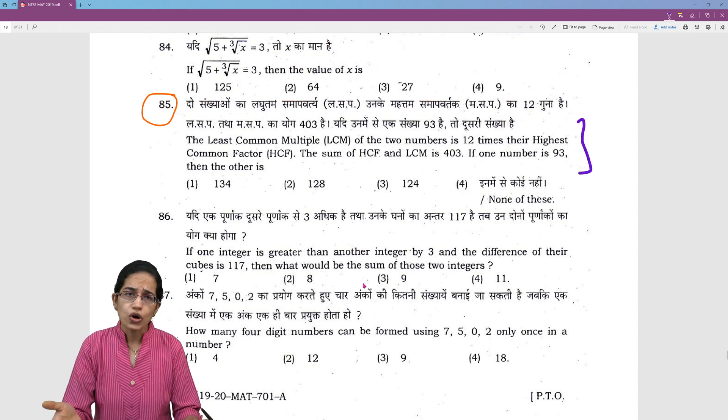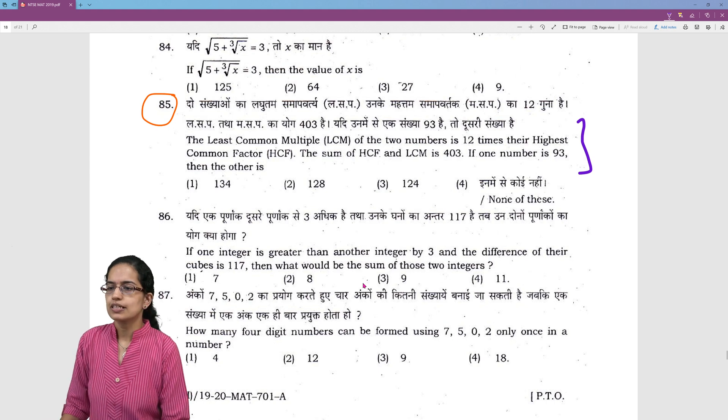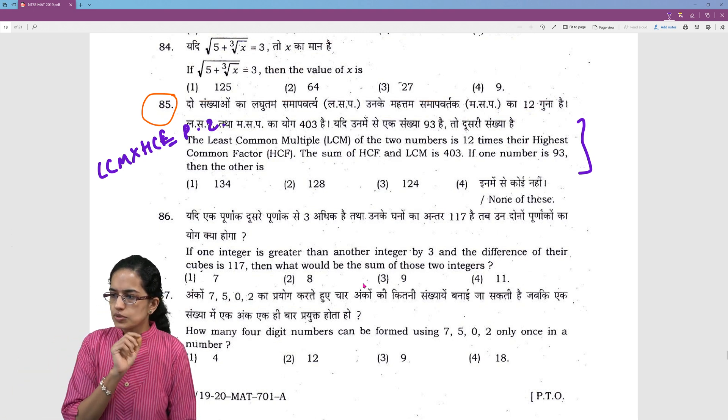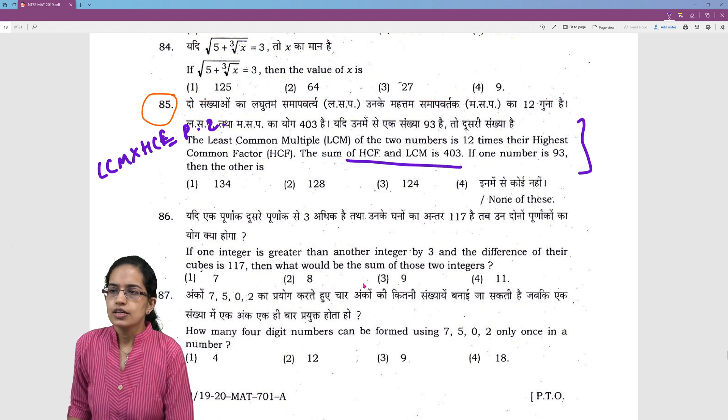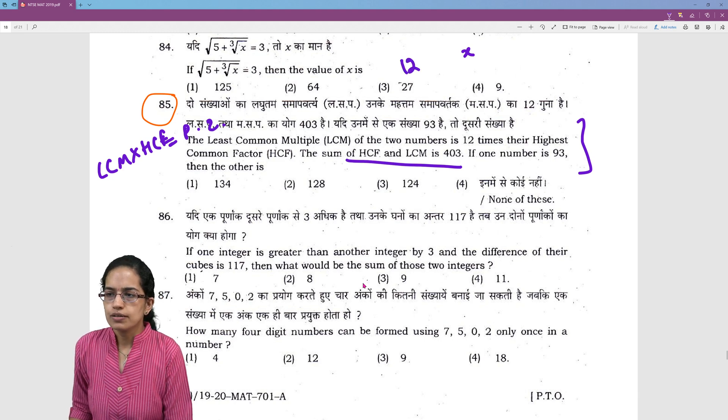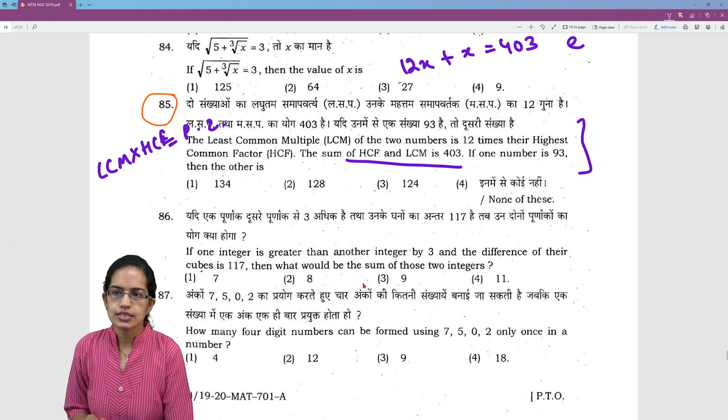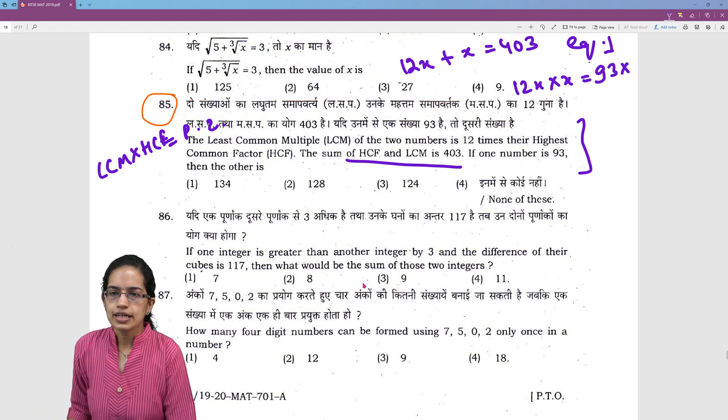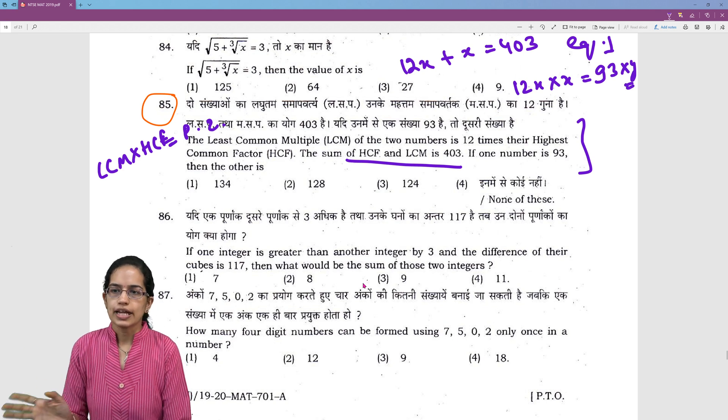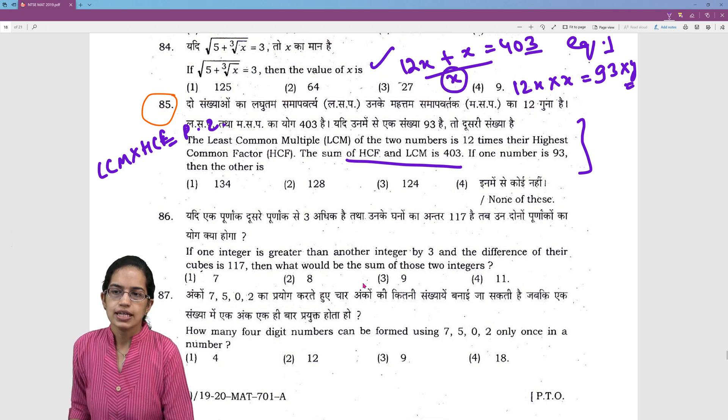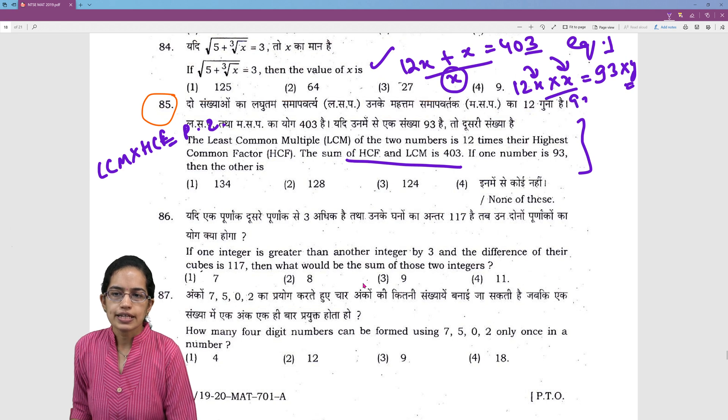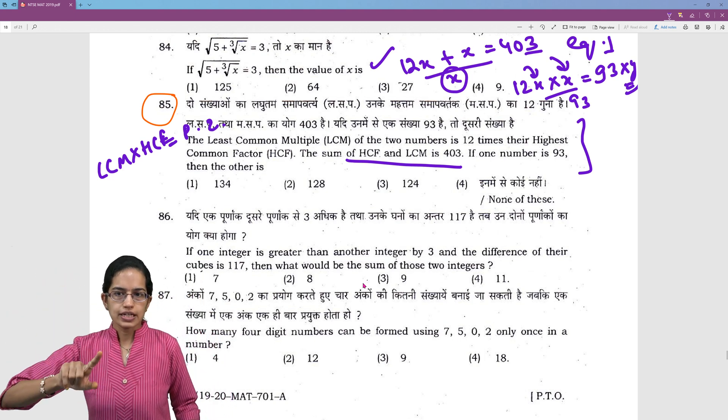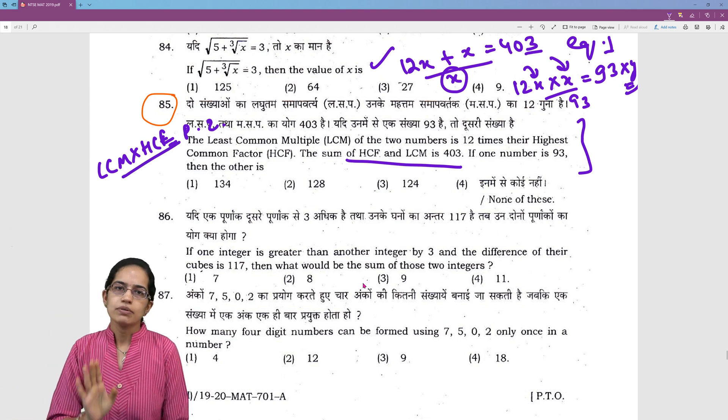Again, there is an interesting question. This, I believe, is not a question for your math but it is a basic mathematics where we say LCM into HCF is equal to product of two numbers. Now, LCM is 12 times the HCF. The sum is 403. So, let me take as HCF is X. LCM becomes 12X. So, 12X plus X is equal to 403. This is my equation 1. My equation 2 is 12X into X which is 12X squared is equal to 93 into Y. So, Y is the other number which is unknown that I have to find. And solving this first equation, I will find out the value for X. I will substitute the value for X here and then divide it by 93 to get Y and I will get Y. So, I have two equations. With one equation, I will get X. I will apply the value of X in the second equation which is LCM into HCF is equal to product of two numbers and I will find out the missing number that is there.